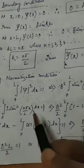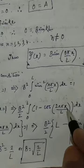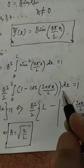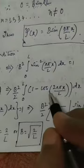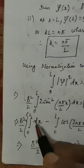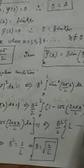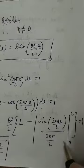Using the identity 2sin²θ = 1 - cos2θ, we get B²/2 times the integral of [1 - cos(2nπx/L)] dx equal to 1, with limits 0 to L. Integrating, the dx term gives L, and the cosine term gives sin(2nπx/L) divided by (2nπ/L), evaluated from 0 to L.